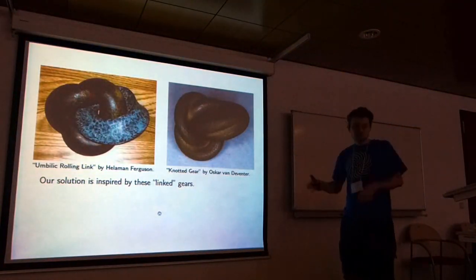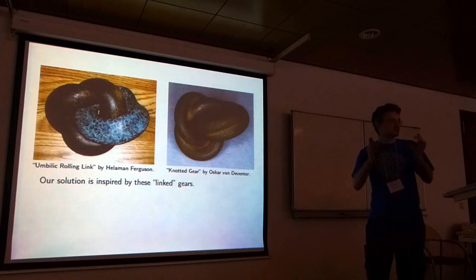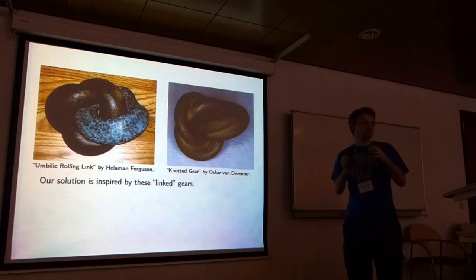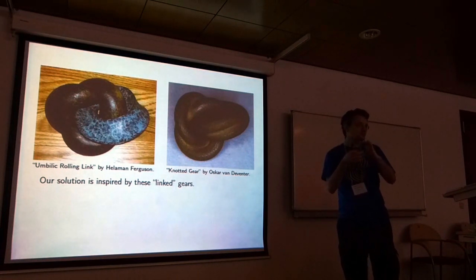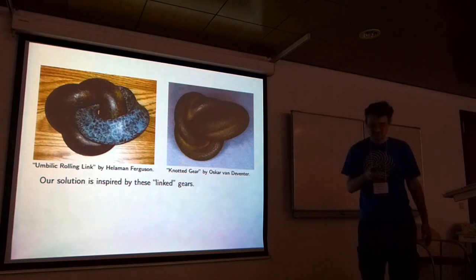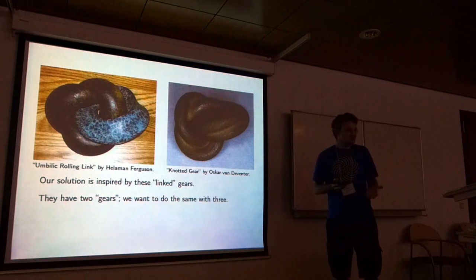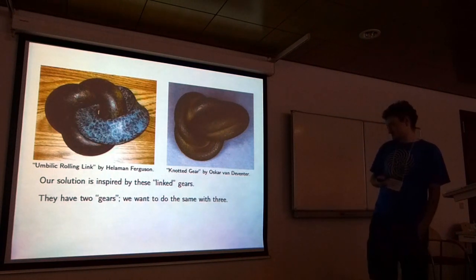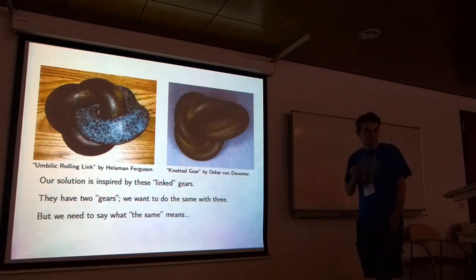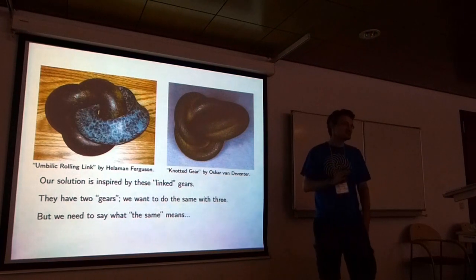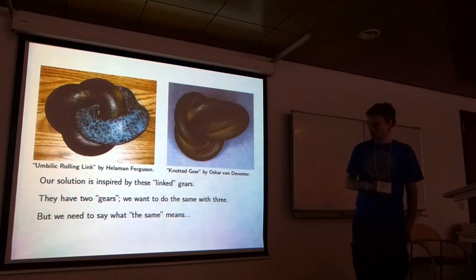Right, so Helen Ferguson's is doing the same thing. You've got these two rings that link through each other, and the shapes of these rings force that if one is rotating, the other must rotate as well. They have two gears, and we want to do this with three. But of course, we need to say what the same means. What is it exactly that they're doing that we want to copy?